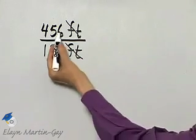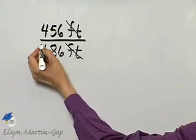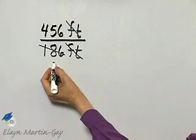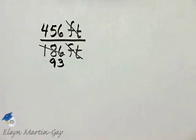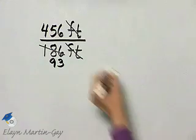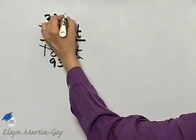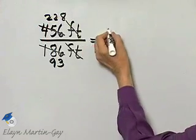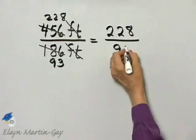Notice there is at least a common factor of 2. So if I divide 186 by 2, I have 93. If I divide 456 by 2, I have 228. So far I have 228 over 93.